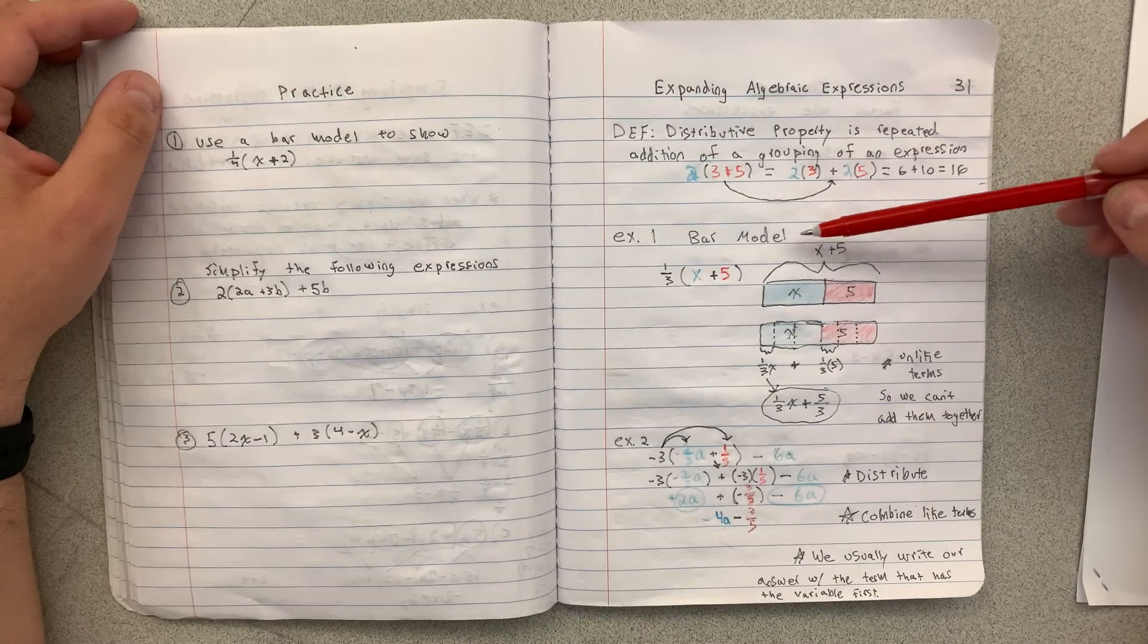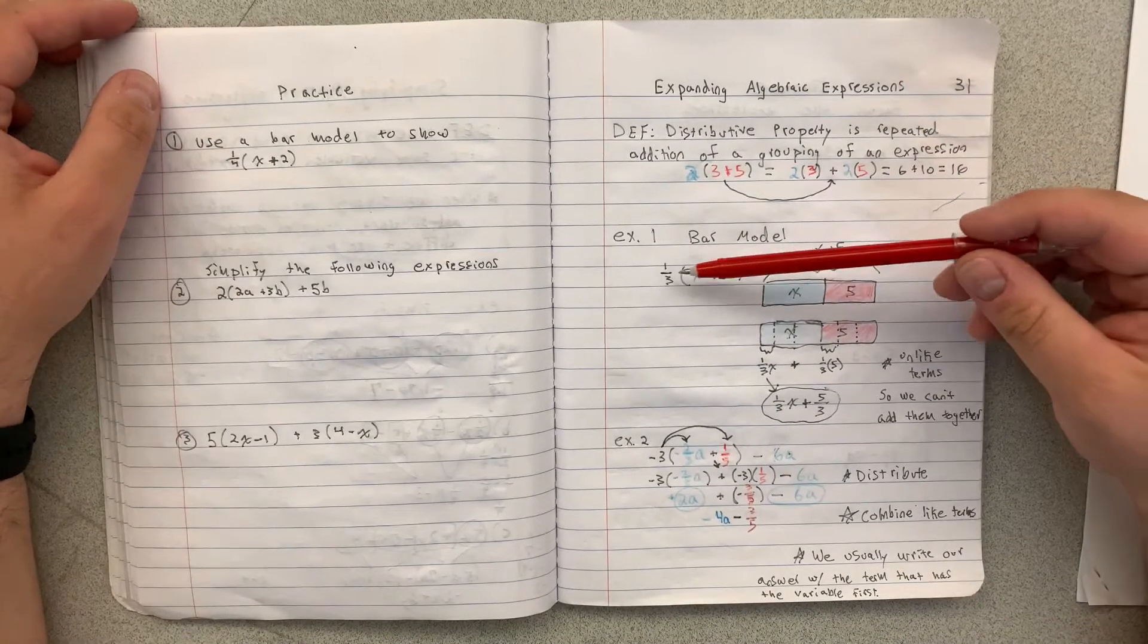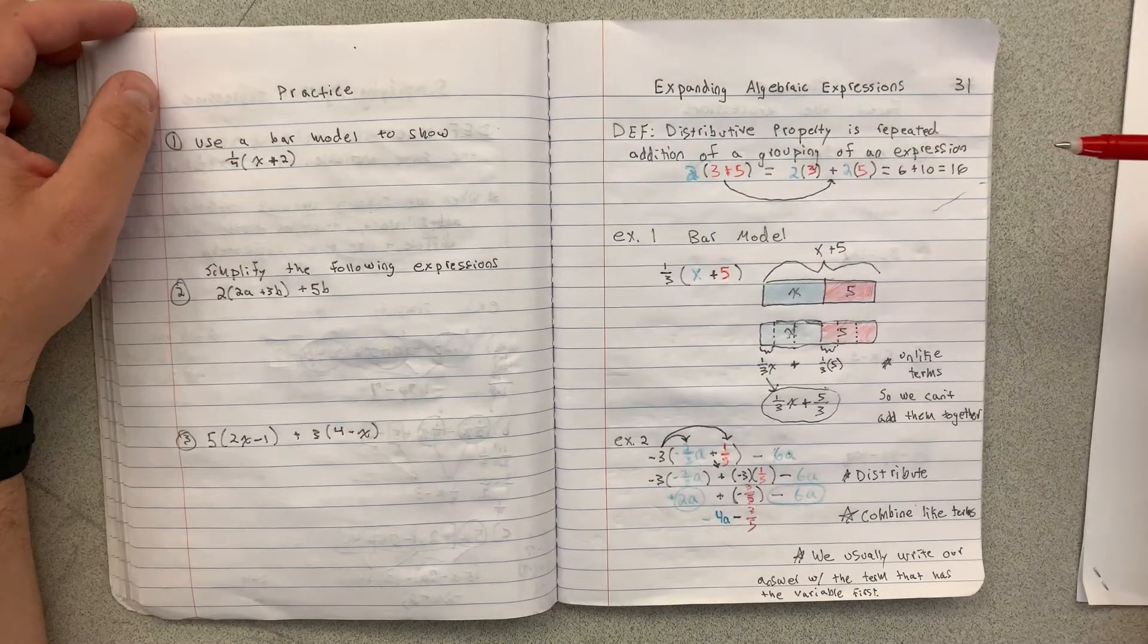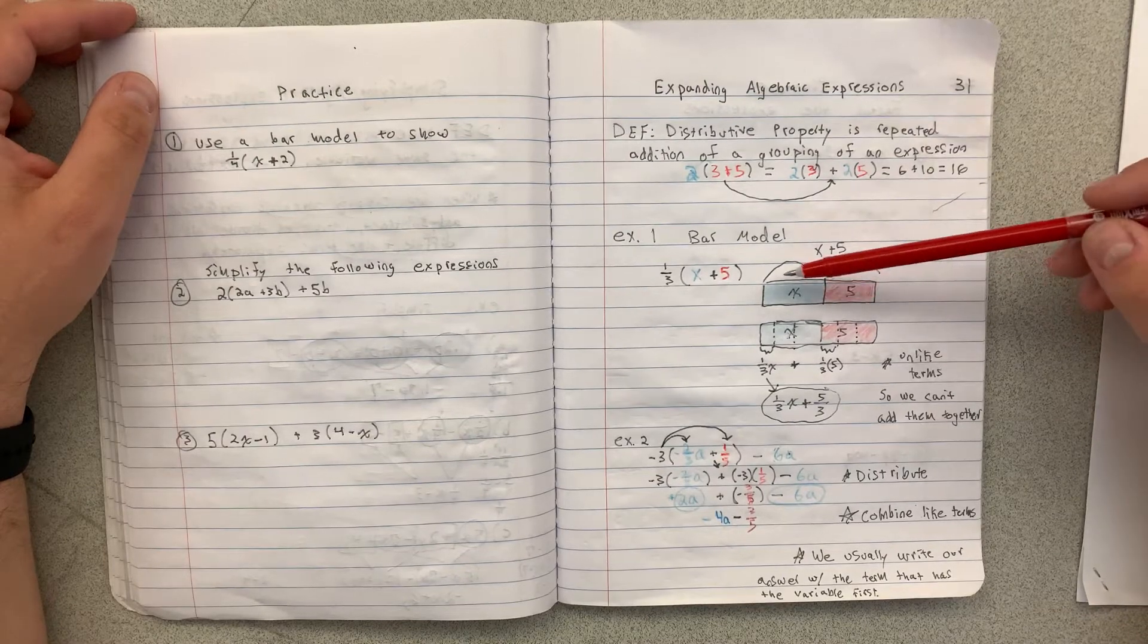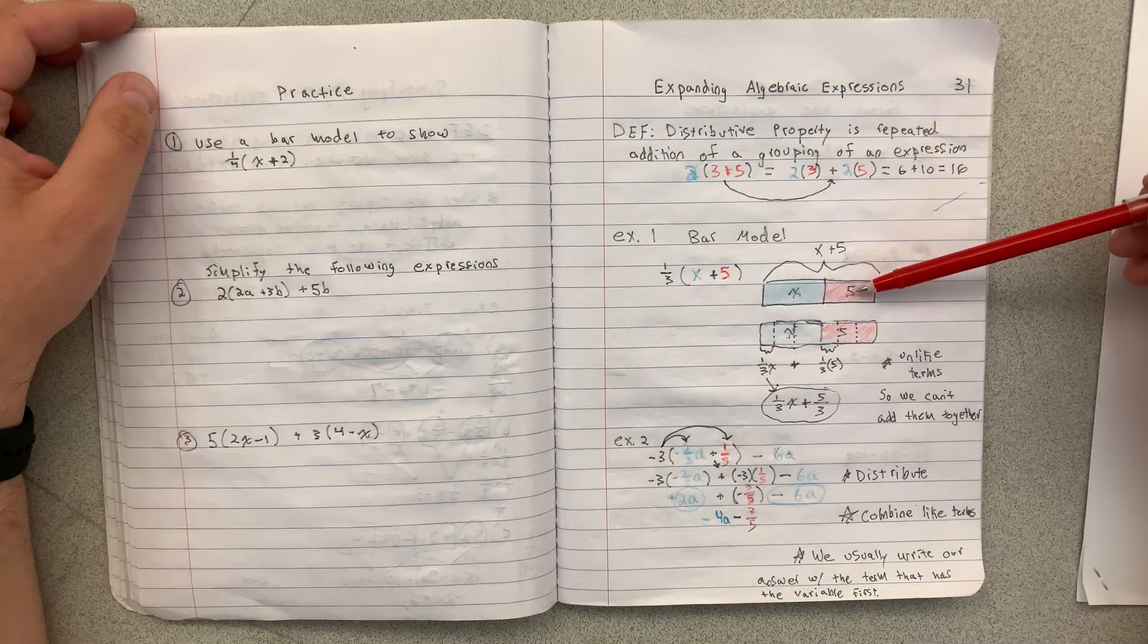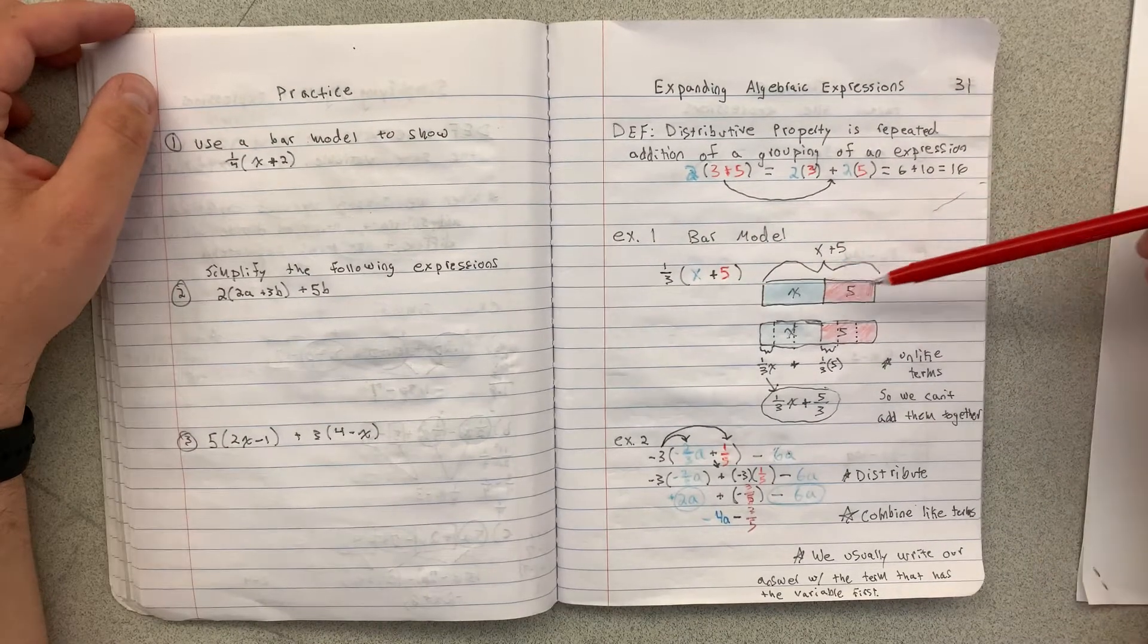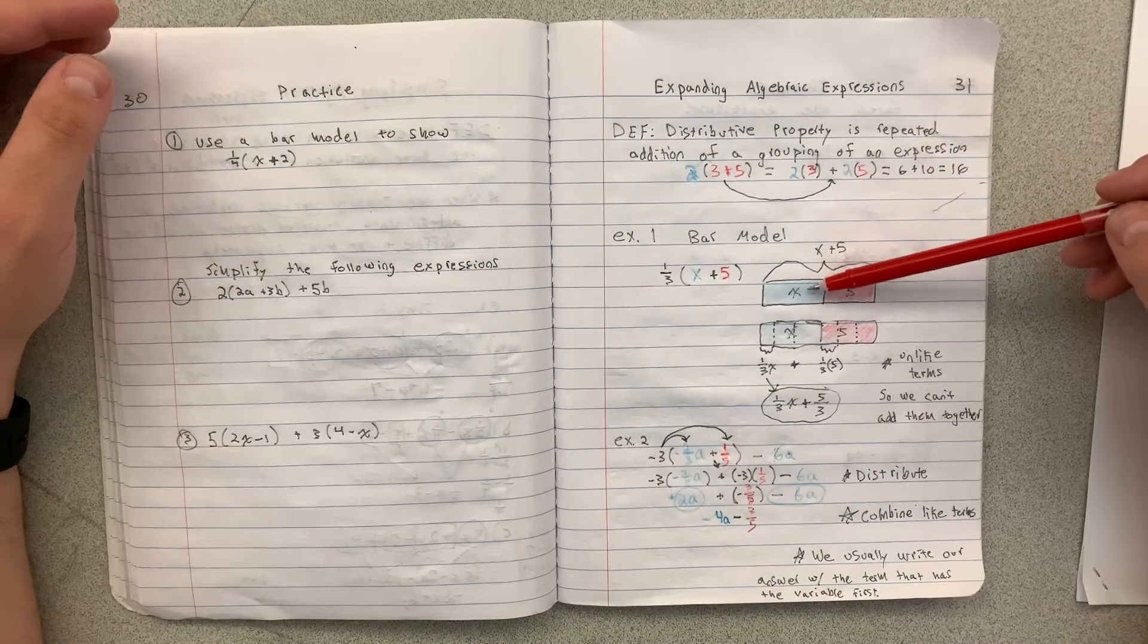In here, we're going to show the distributive property using a bar model. So we're going to do the problem 1 third times x plus 5. And my x is in blue and my 5 is in red. So I'm going to represent the bar x plus 5 as this rectangle, with x in blue and 5 in red. Now we don't know how big x is. I made it the same length as 5. Really, it could be all the way over there, a huge rectangle. But they don't give us x and we don't have to find it. So I'm just representing it with this one here.